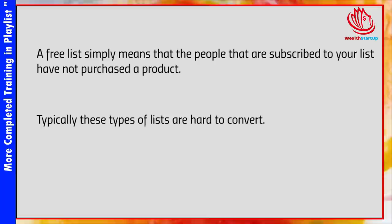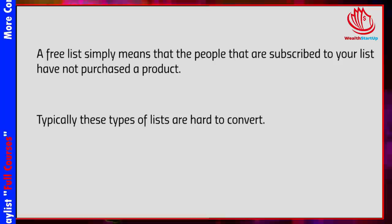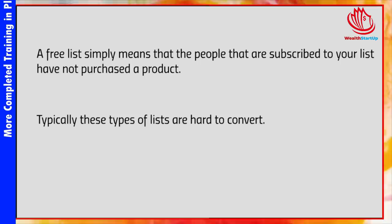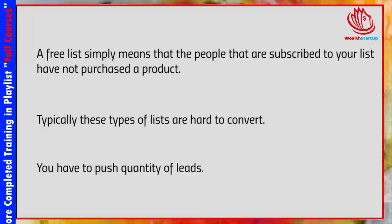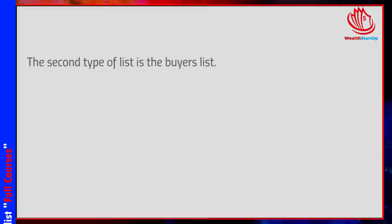Typically these free lists are a little bit harder to convert because people do not know you — they have not put their trust and faith in you. If somebody subscribes and they've purchased from you before, that would be more of a customer-type subscriber. But with free subscribers who don't know you, you have to push quantity. Instead of focusing on quality and conversions, you have to focus on numbers — instead of 100 buyers, you need 1,000 or a couple thousand.